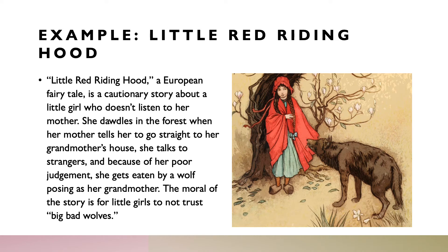Let's look at how a one-paragraph summary that answers those questions might read. 'Little Red Riding Hood, a European fairy tale, is a cautionary story about a little girl who doesn't listen to her mother. She dawdles in the forest when her mother tells her to go straight to her grandmother's house. She talks to strangers, and because of her poor judgment, she gets eaten by a wolf posing as her grandmother. The moral of the story is for little girls not to trust Big Bad Wolves.' You can see how all of those journalistic answers come into this one-paragraph summary.